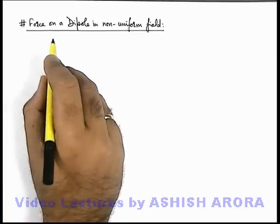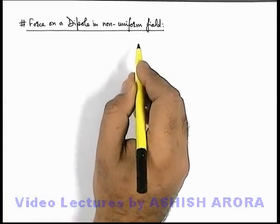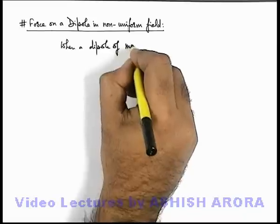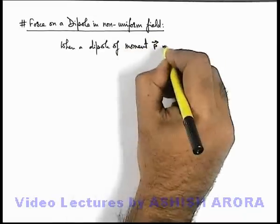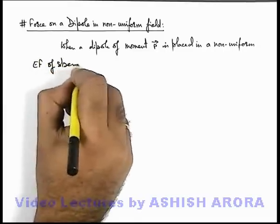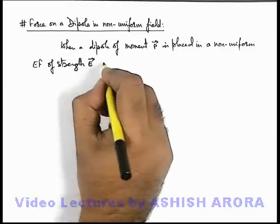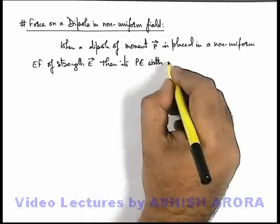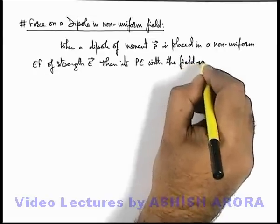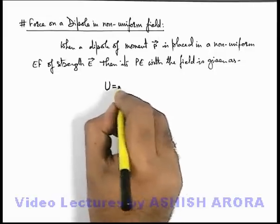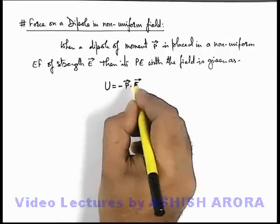Let us study the force on a dipole when it is placed in a non-uniform electric field. When a dipole of moment p vector is placed in a non-uniform electric field of strength E vector, then its potential energy with the field, which is also termed as interaction energy, is given as — we already discussed this in the previous sections — it is given as minus p dot E, or it is minus p E cos theta.